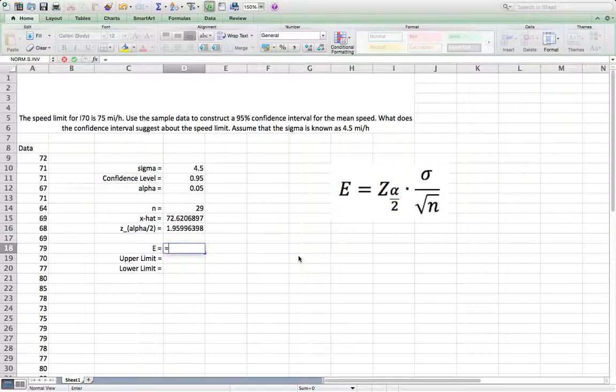So E equals z score is in D16, multiply sigma, which is in D10, then divide by square root n, which is in D14.